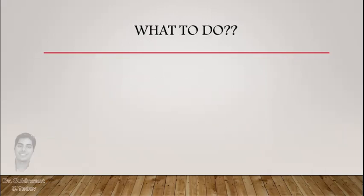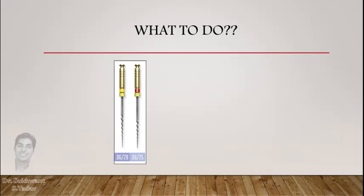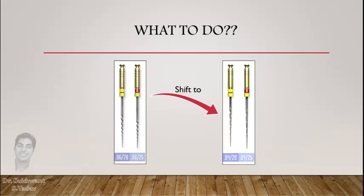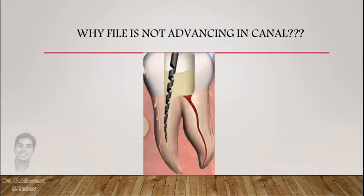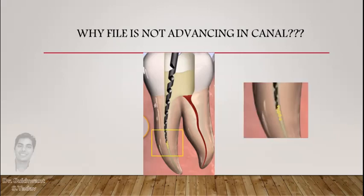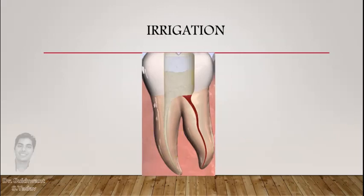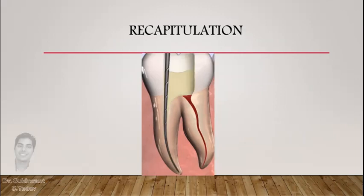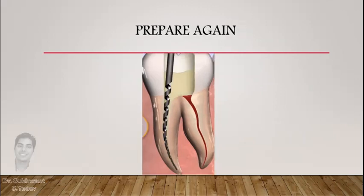If a file is not progressing in the canal, it may be because its size or taper is too large for that canal — in that scenario, shift to a smaller size instrument, like 4% taper. Another reason may be dentinal debris packed inside the canal; for that, irrigate the canal, recapitulate it, and then try preparing the canal again.